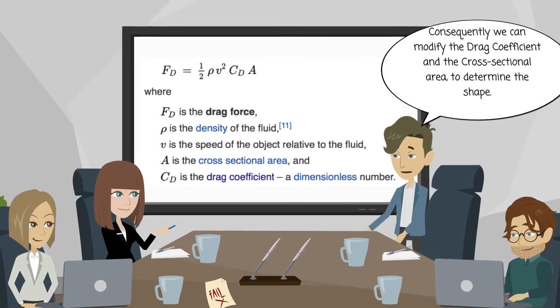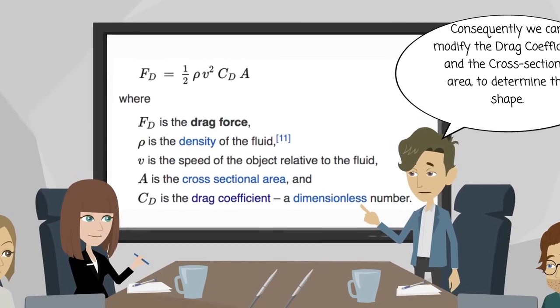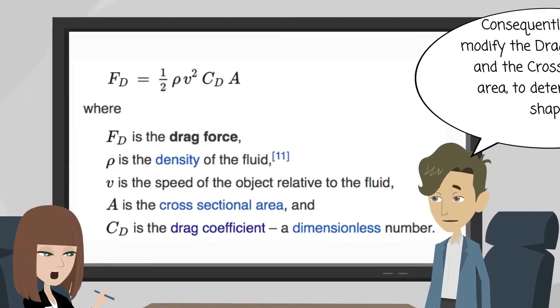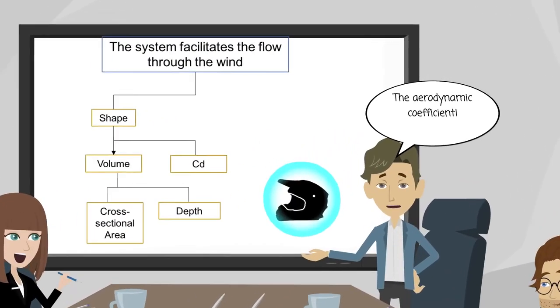Consequently, we can modify the drag coefficient and the cross-sectional area to determine the shape, the aerodynamic coefficient. Right.